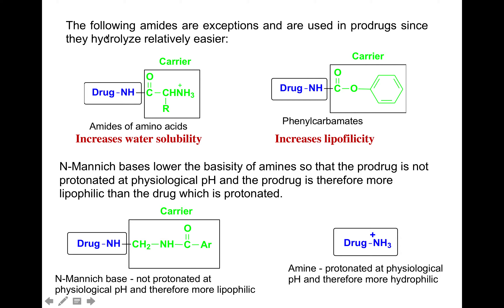This is actually a type of amino acid, and we know amino acids are quite water soluble. So if you want to improve the water solubility of your amine drug, you can use this approach where you conjugate it with an amino acid. The amino acid will increase water solubility because it will be protonated at physiological pH. Similarly to ester prodrugs, if you have a carrier with an aromatic group, it will increase the lipid solubility.